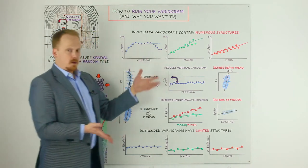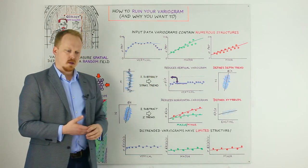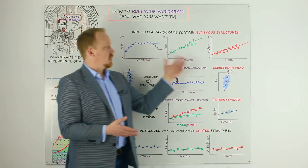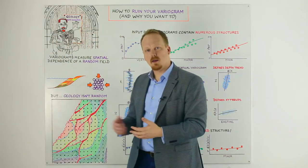And so typically, you'll see a reduction of probably about half of the variation in the vertical sense. But it won't have any impact on the major or minor directions because the same columns exist everywhere in X and Y space.